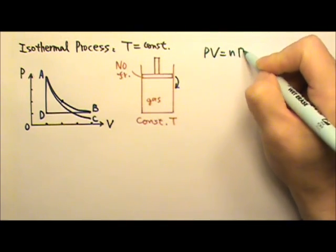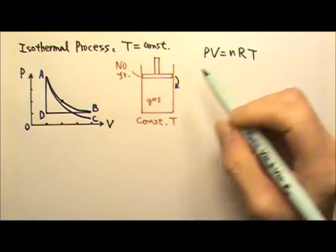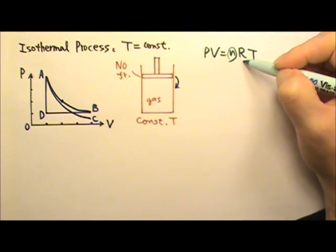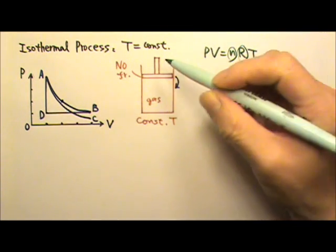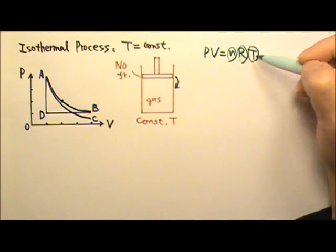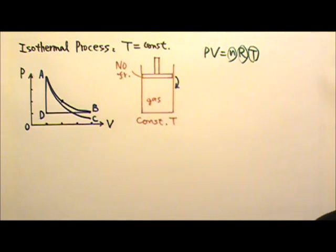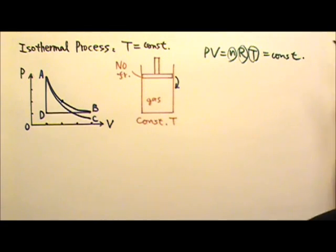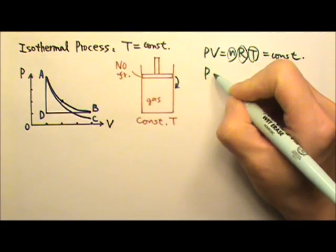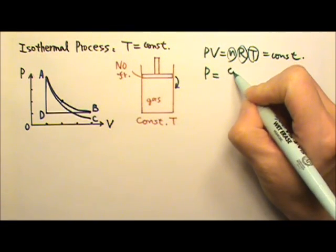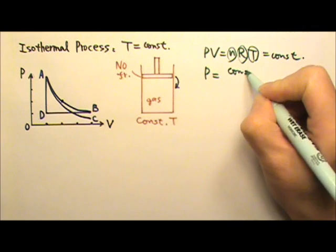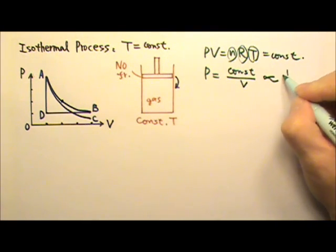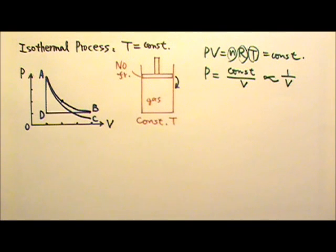PV equals nRT. It's a closed system — the number of moles is a constant, the gas constant is a constant, and now the temperature is also a constant. So P times V equals a constant, which means P is proportional to 1 over volume.